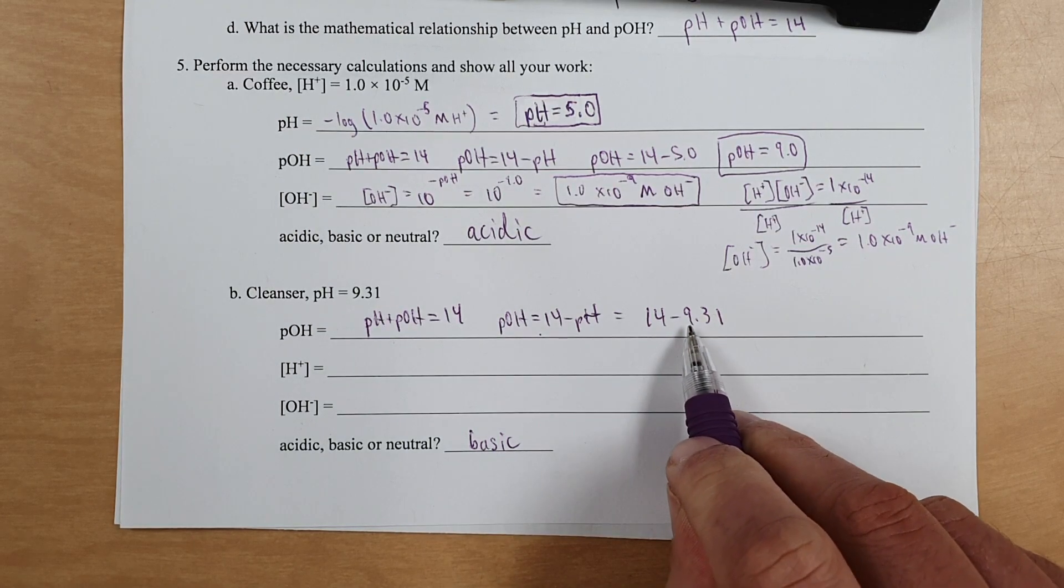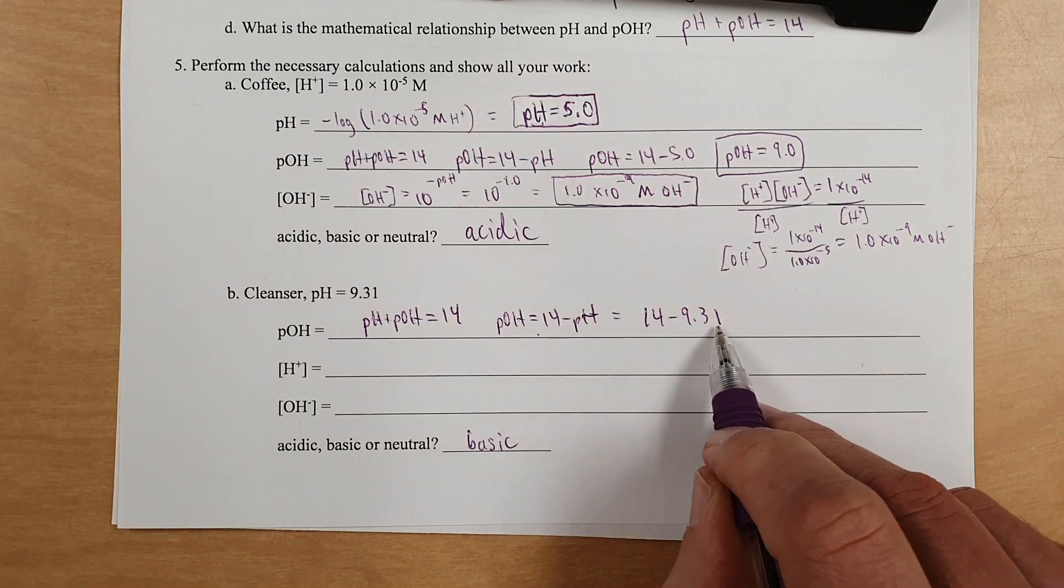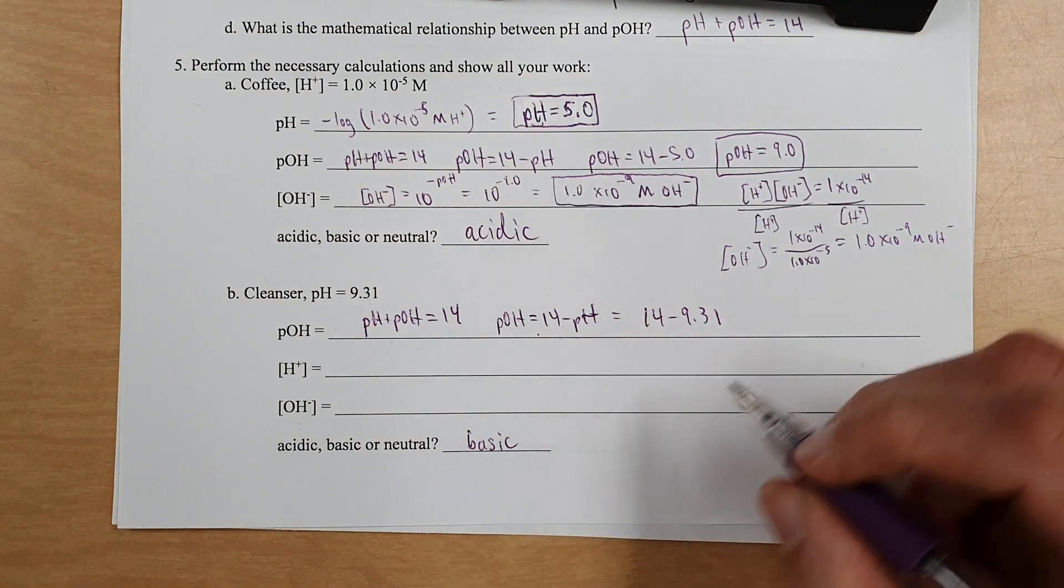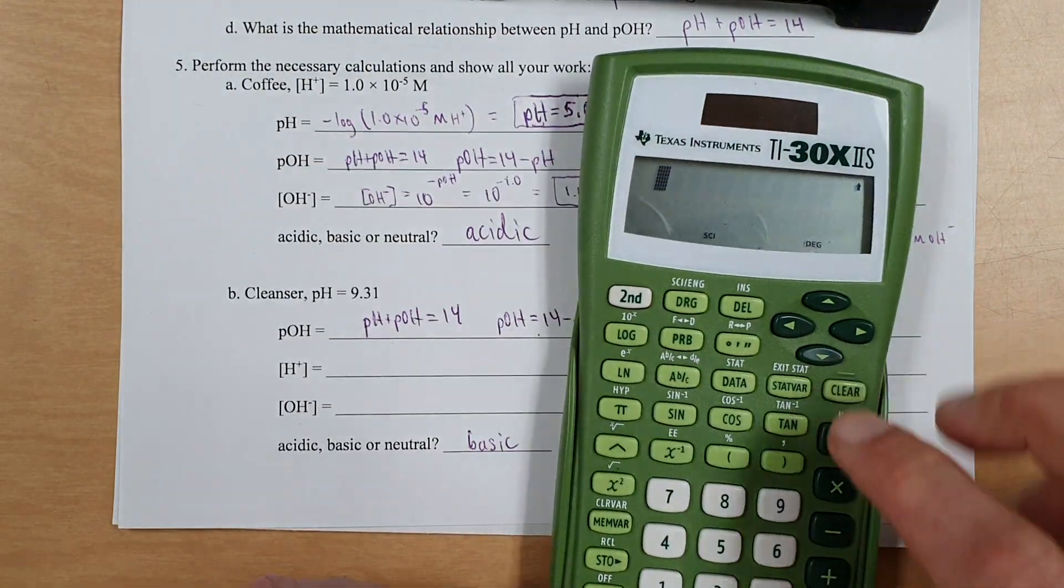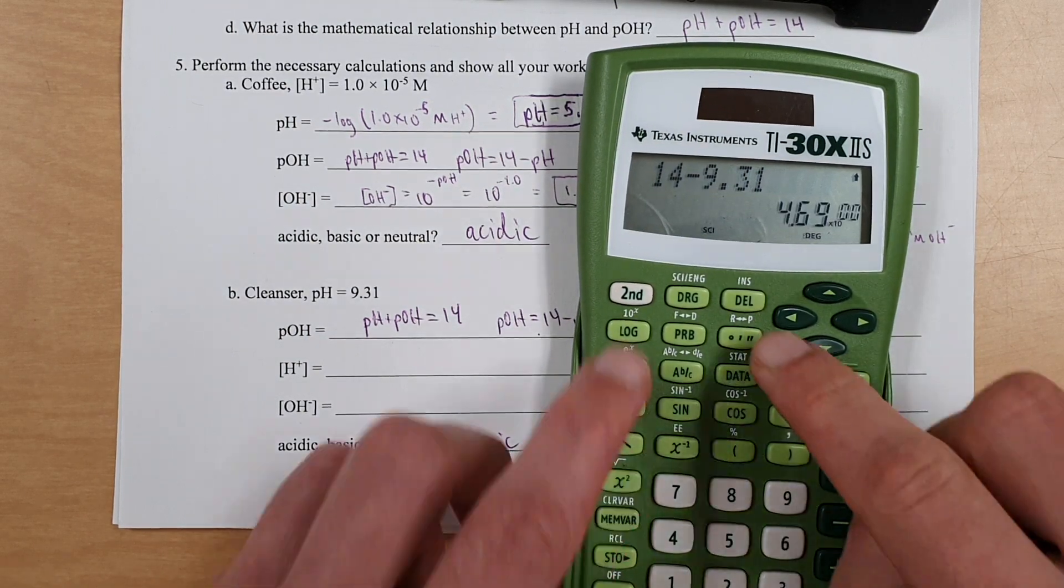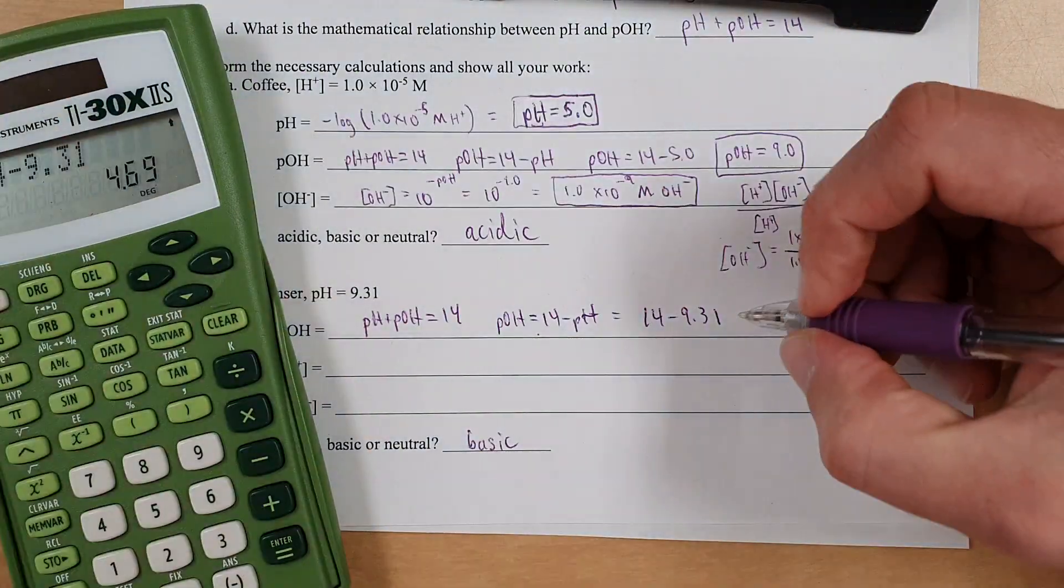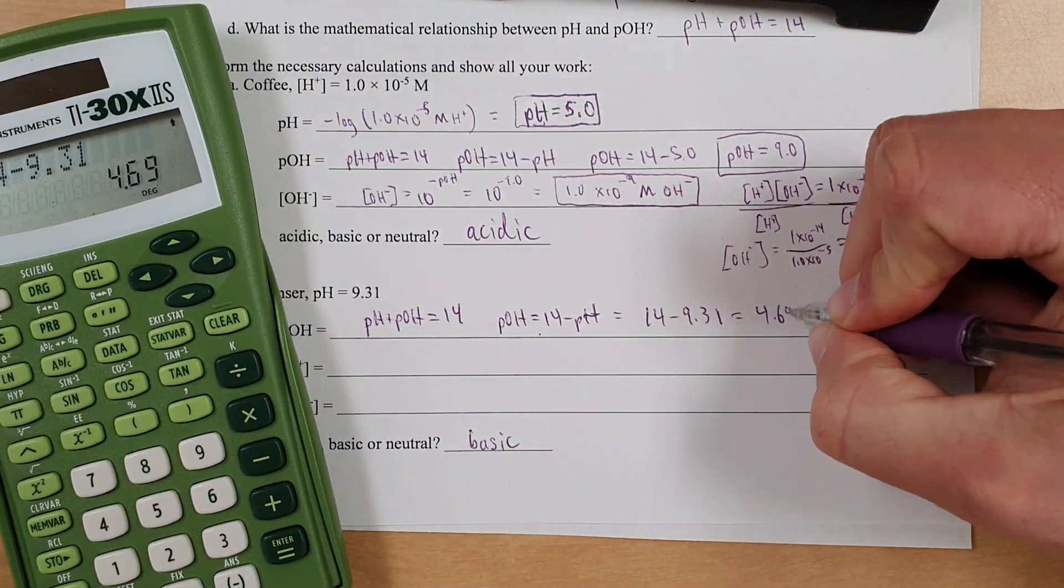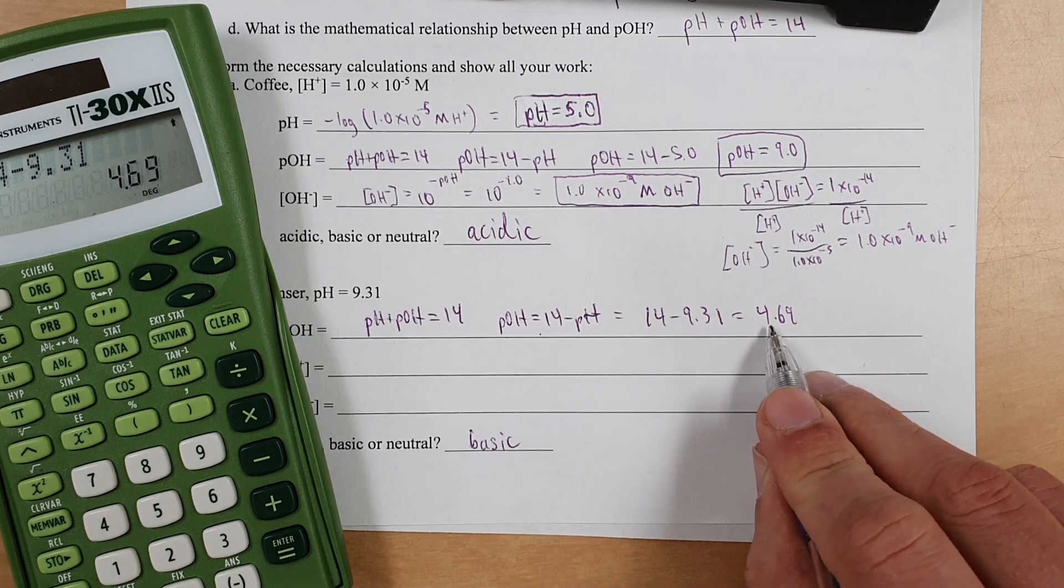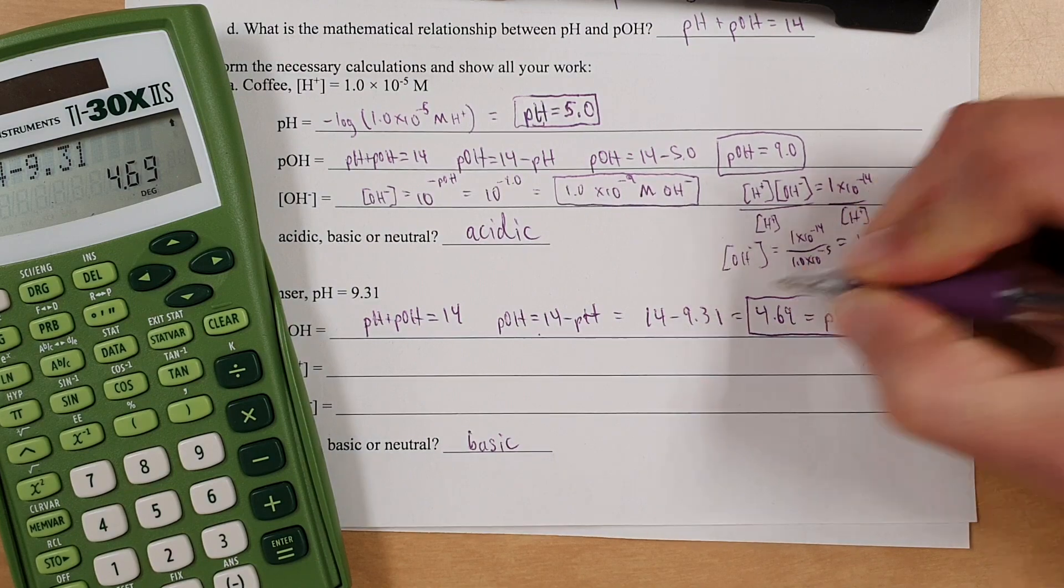So, 14 minus pH is 14 minus 9.31. And when we subtract, you count decimal places. So this goes to the hundredths place. This is infinite sig figs, so your answer should go to the hundredths place. So 14 minus 9.31 is this. Oops, I have it still in scientific notation. There you go, 4.69. And since this goes to the hundredths place, this is fine. So 4.69 is the pOH.